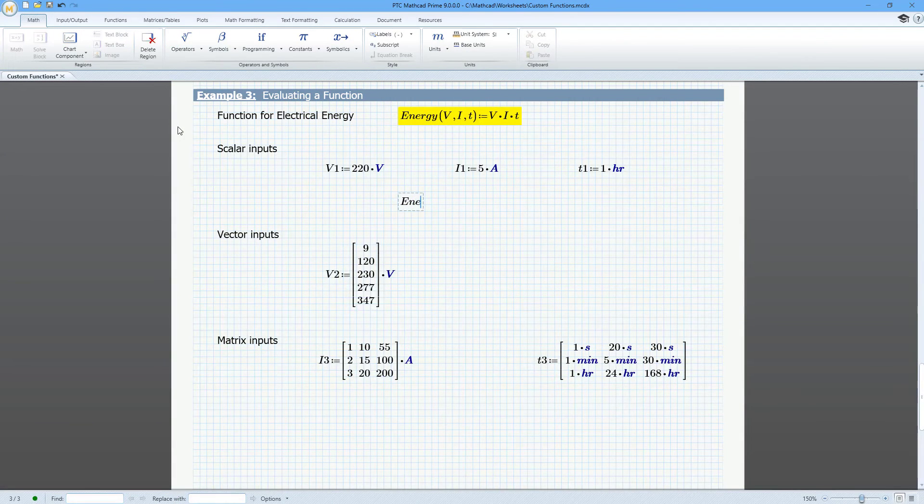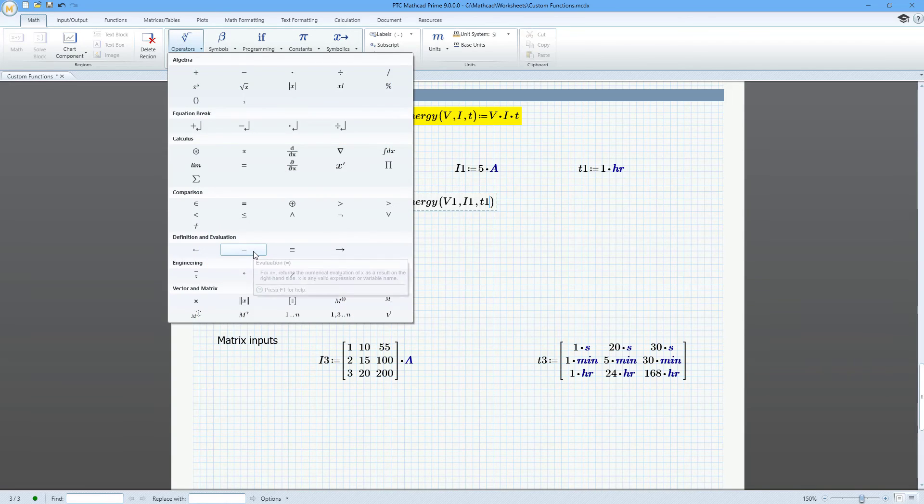To evaluate the function, enter the name, the inputs, and the evaluation operator. The keyboard shortcut is the equals sign.